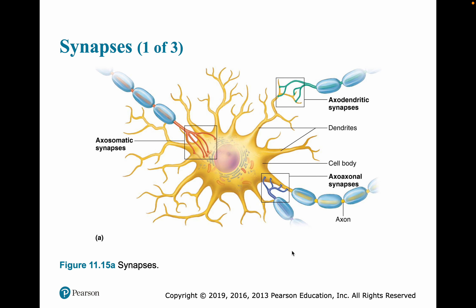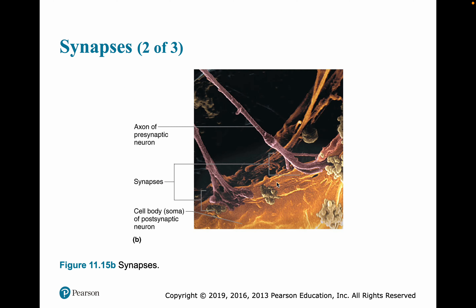Here we have synapses that go directly to the cell body of a second neuron. Here we have synapses between the dendrites of a neuron and an axon of another neuron. And here we actually have an axon-to-axon connection between neurons. These are the three major types of synapses.